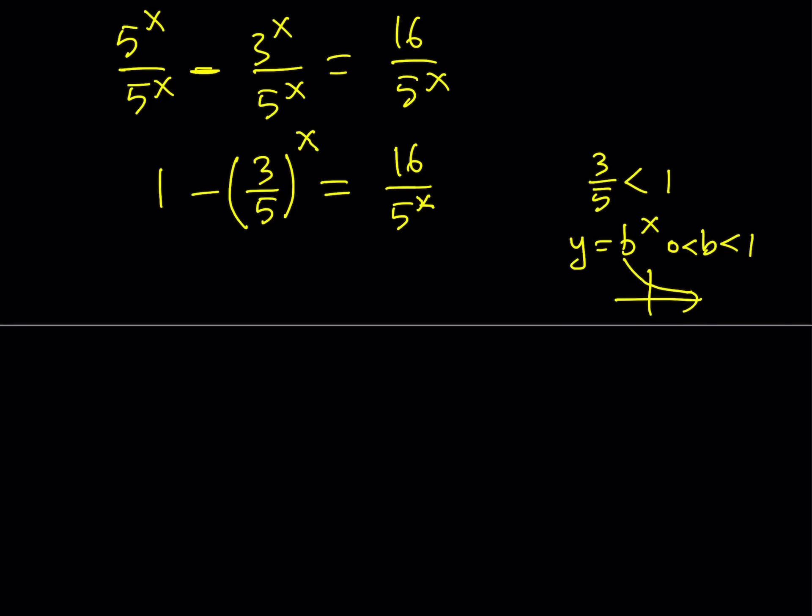If b is greater than 1, then it's increasing, as you know from e to the power x or 2 to the power x. In this case, we have a decreasing function. So 3 over 5 to the power x is decreasing.